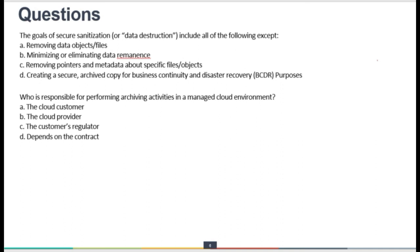The question: The goals of secure sanitization and data destruction include all of the following EXCEPT which? Removing data objects or files, eliminating data remnants, and removing pointers and metadata about specific files or objects are all valid goals. However, creating a secure archive copy for BCDR purposes is NOT a goal of data destruction — that is the correct answer, as it is the exception that does not match the data destruction purpose.